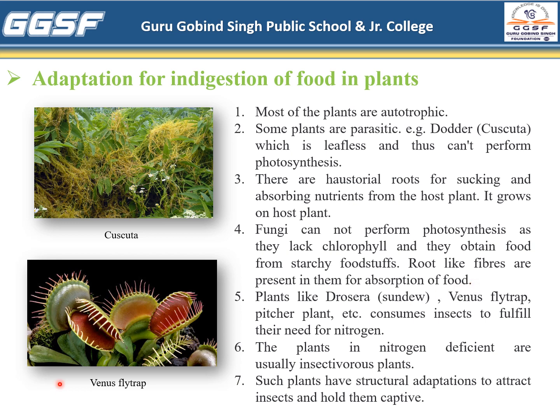Now, all of you know that plants need nitrogen, phosphorus, and potassium for growth. Plants like the Venus flytrap and pitcher plant grow in soil which is deficient in nitrogen. So how do they fulfill their need for nitrogen? They fulfill their need for nitrogen by consuming insects. In fact, these plants are very colorful and attractive so that insects get attracted toward them. Once the insects get attracted, these plants hold the insect and keep it captive. Thank you.